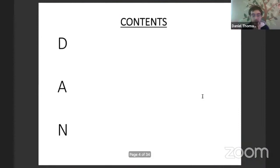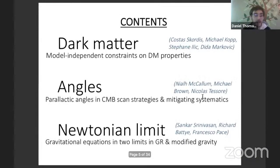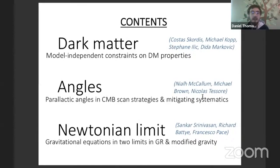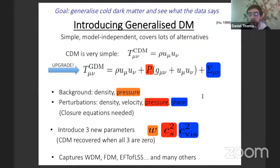Three topics: first, something about dark matter and constraining its properties; then a step change to scan strategies for ground-based CMB experiments; and finally about 20 minutes on the Newtonian limit and Newtonian approximation. My promise is to try and make the middle topic not scare the theorists, and to make the final topic — possibly a bit abstract — interesting for the observers.